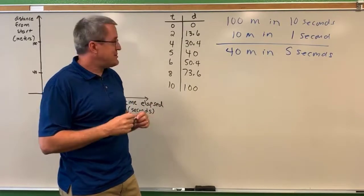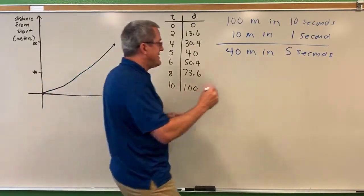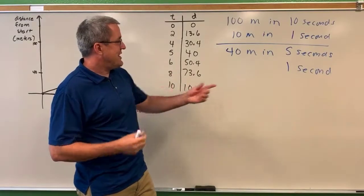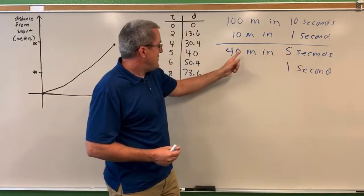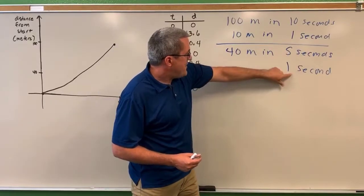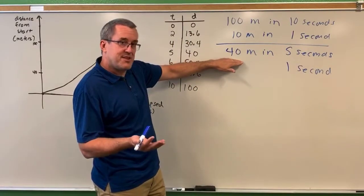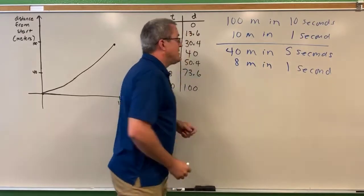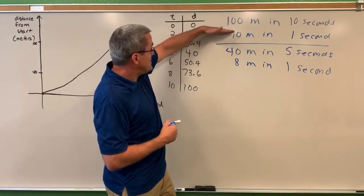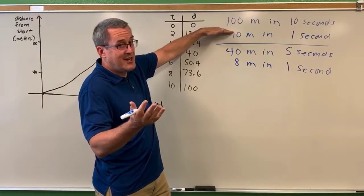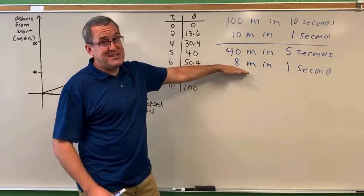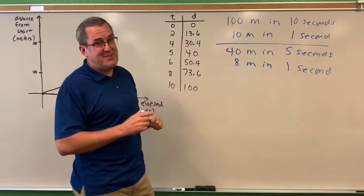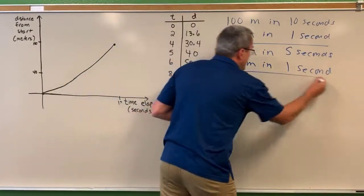We can say he ran 40 meters per five seconds, but that's not conventional. If in five seconds he ran 40 meters, then in one-fifth the time he runs one-fifth the distance — one-fifth of 40 meters is eight meters. So eight meters per second. Over the whole race he ran as if at a constant 10 meters per second, but in the first half he averaged just eight meters per second. That's just an average over those first five seconds.